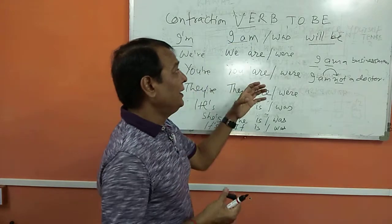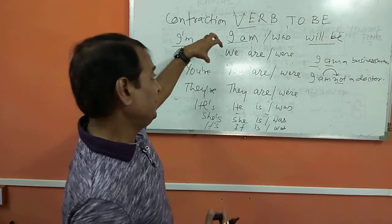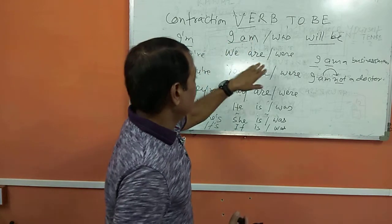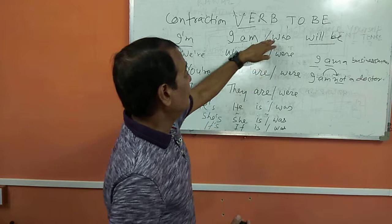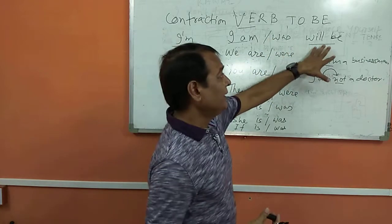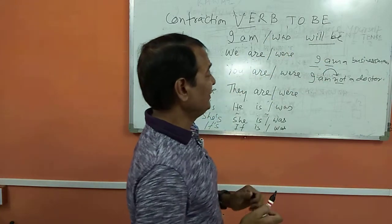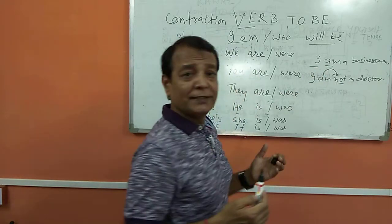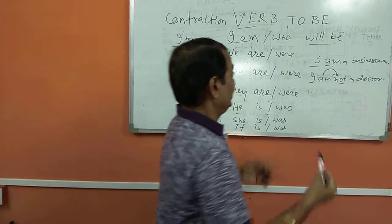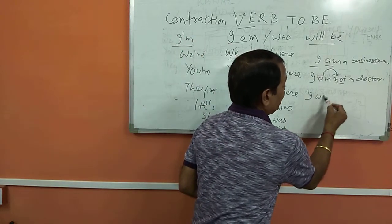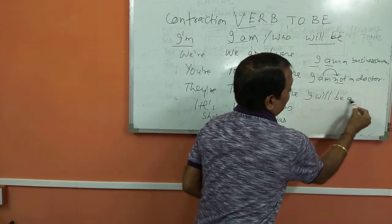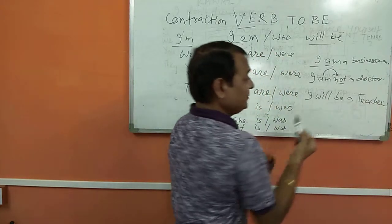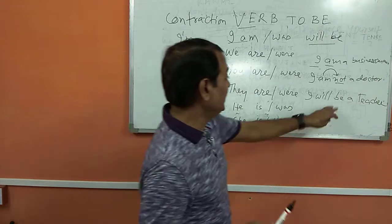This verb to be part — you have to keep in mind these words: am, is, are, was, were. And 'will be' is used for future purpose. Suppose I said 'I am a businessman,' but 'I will be a teacher.' That means I am not a teacher now — I will be a teacher — that is a thing of the future.